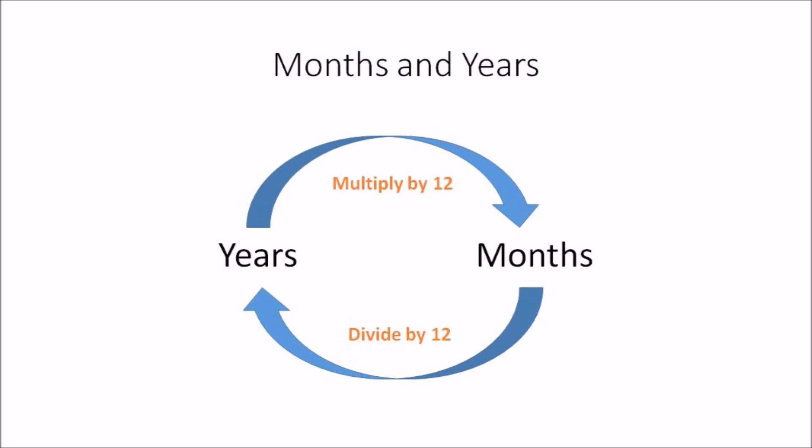So if you have to convert years to months, all you need to do is multiply the amount you have in years by 12. And if you have to convert months to years, all you need to do is divide the amount you have in months by 12. And that's how you can convert between years and months.